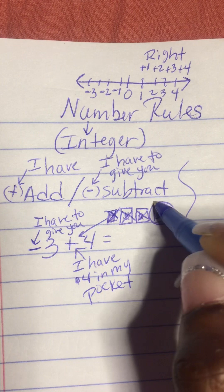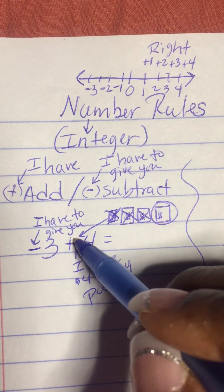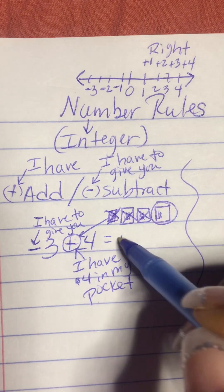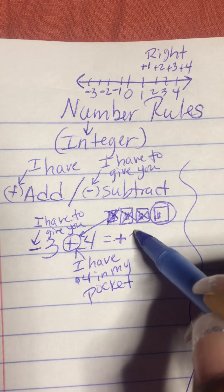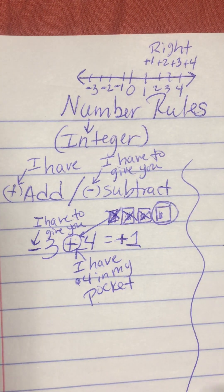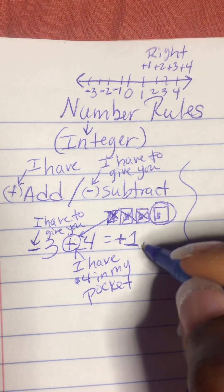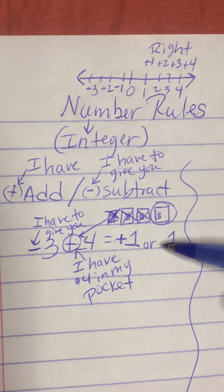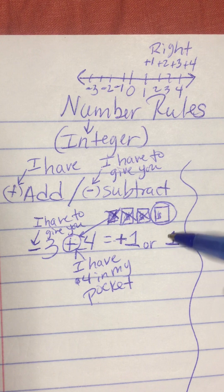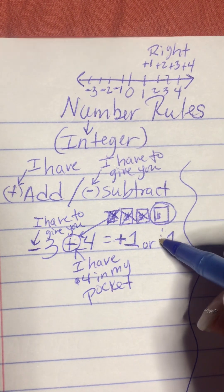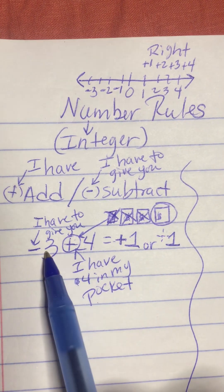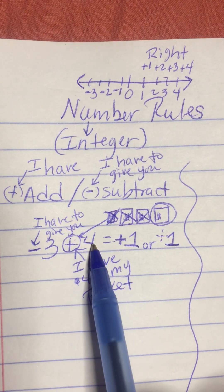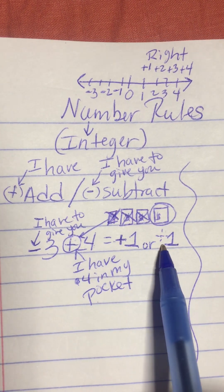That means that I have. Remember, the symbol for 'I have' is a positive. That means I have $1 left over — or you just put the number 1. Remember, no sign in front of it means there's an imaginary plus sign there. So negative 3 plus a positive 4 is a positive 1.